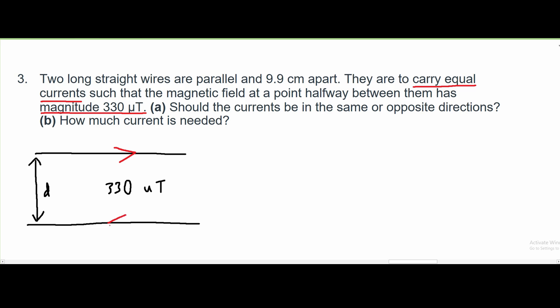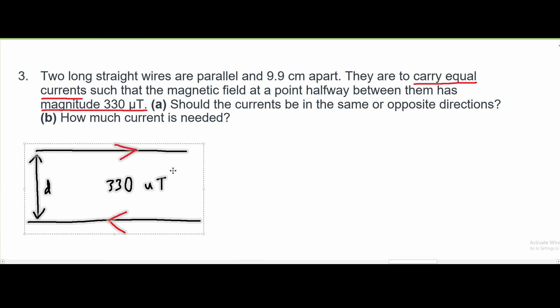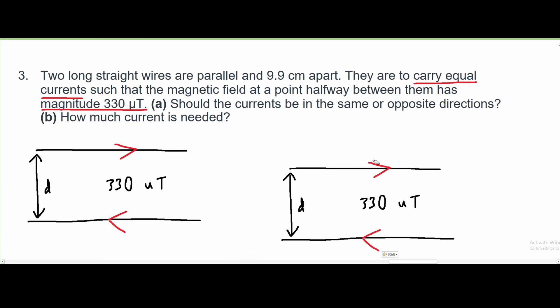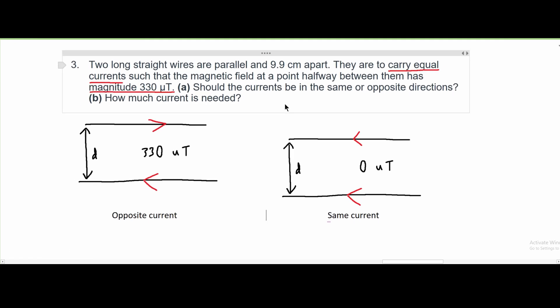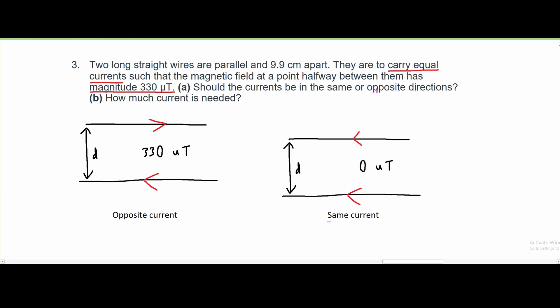So we have one going this way and one going this way. If we were to have this, but the currents were going in the same direction, our magnitude would not be 330 micro teslas. It would just be zero. We would say that our currents will be in the opposite direction.